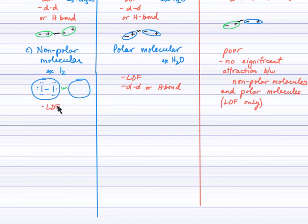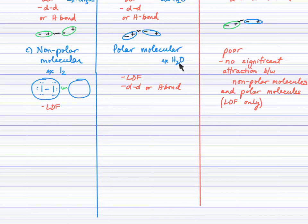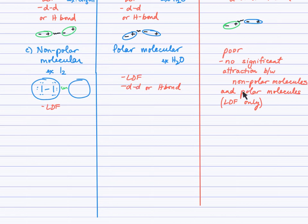Hopefully you were thinking London dispersion forces between iodine particles since they're both non-polar molecules. London forces and either dipole-dipole or, in the case of water, hydrogen bonding — significantly strong intermolecular attractions. How will these two interact? Very poorly. There'll be no significant interaction between a non-polar molecule and a polar molecule like water. All they can do is London force attract between them, and that's not going to be enough to overcome the strength of the hydrogen bonding that water molecules experience with each other. The key is that there's no significant attraction between the solute and the solvent strong enough to overcome the attractive forces between the polar solvent particles.